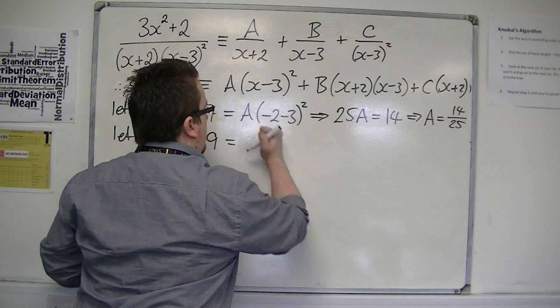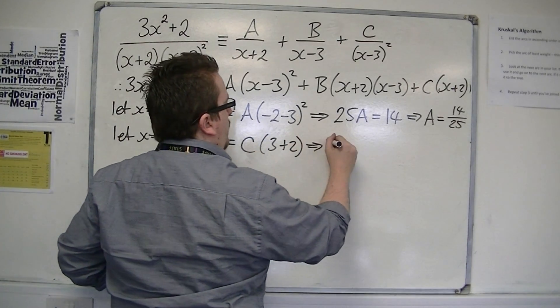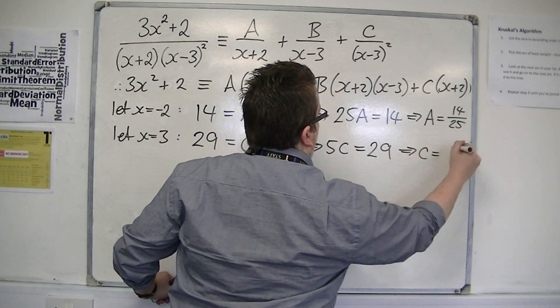And I get left with C times 3 plus 2. So, 5C is 29, so C is 29-fifths.